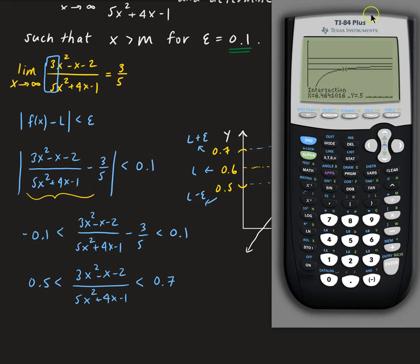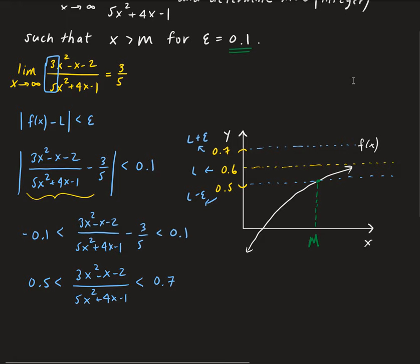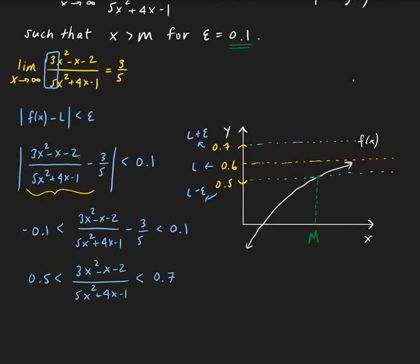We want the integer value, so we're going to round up. The value for M is going to be 7. That is the solution we want. So M equals 7. For any x value greater than 7, the function values for those particular x values will be within this epsilon neighborhood, and the difference between the function value and L will be strictly less than epsilon.